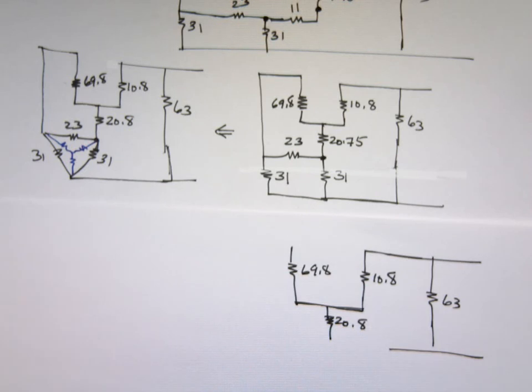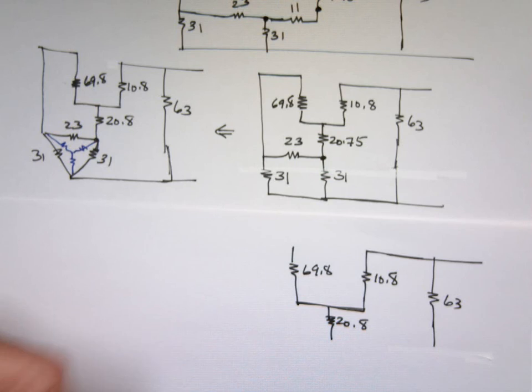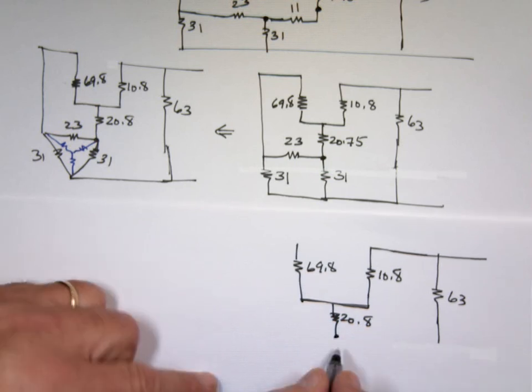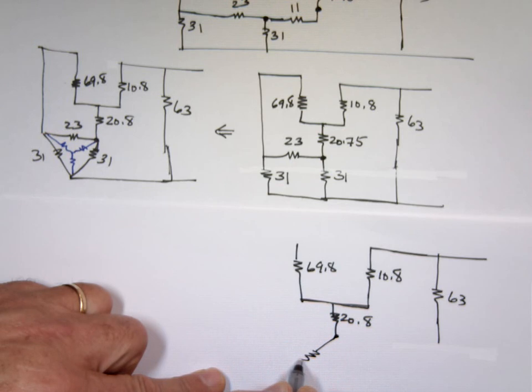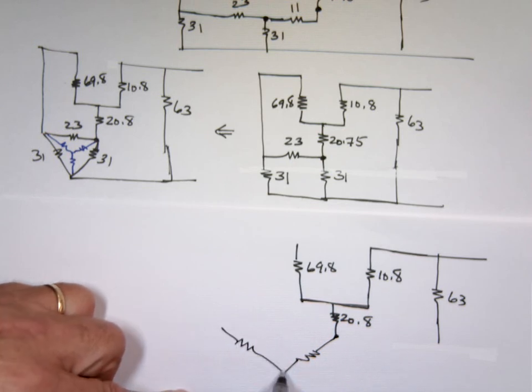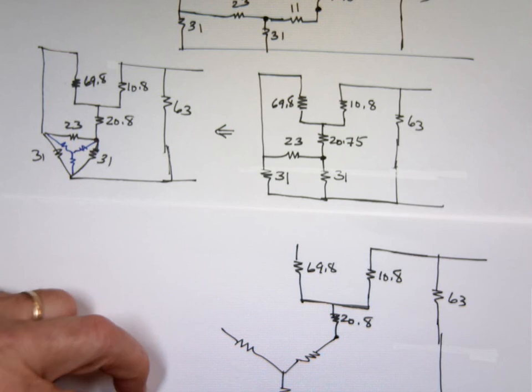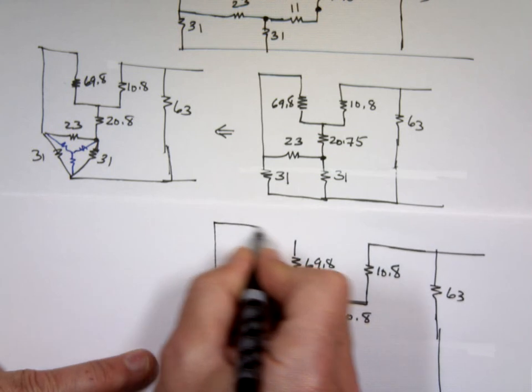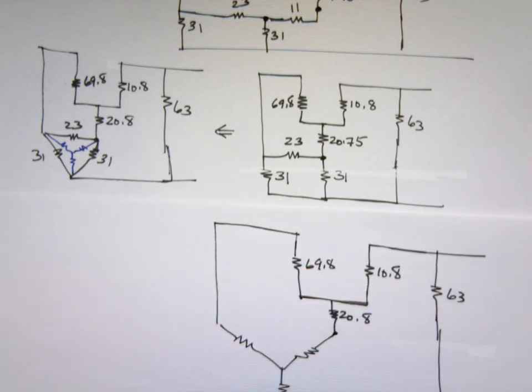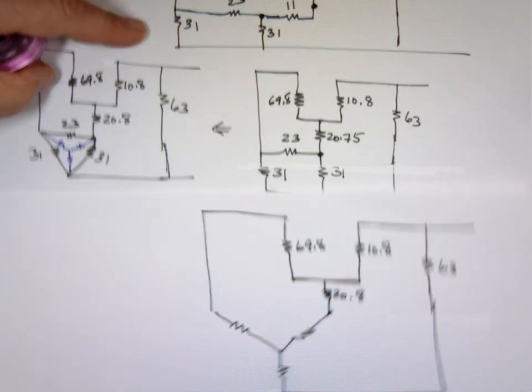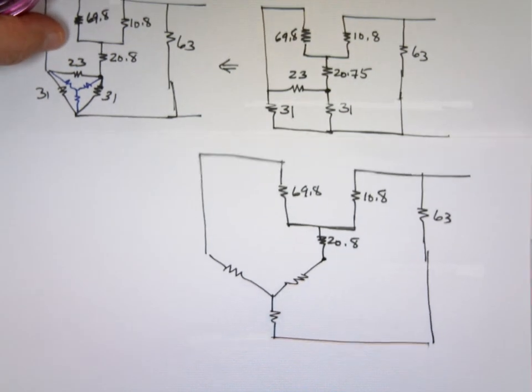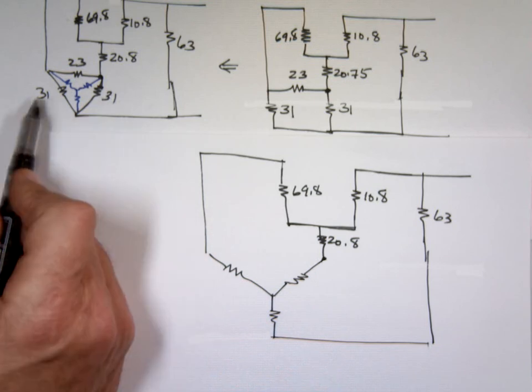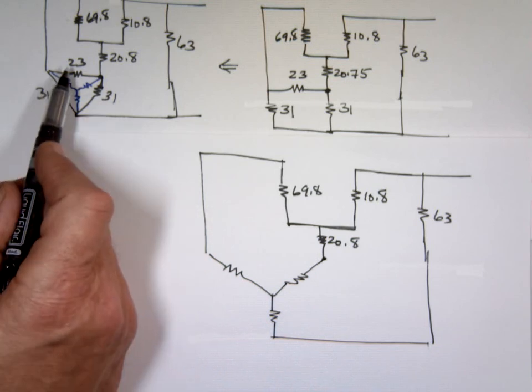Again, I jumped the gun here. And now I'm going to do the Y to delta here. Here we go. So I'm going to replace that with one resistor this way, one that way, and one down. And this is going like this, let's add 31, 31, 23, what's the sum here, 62, 85.